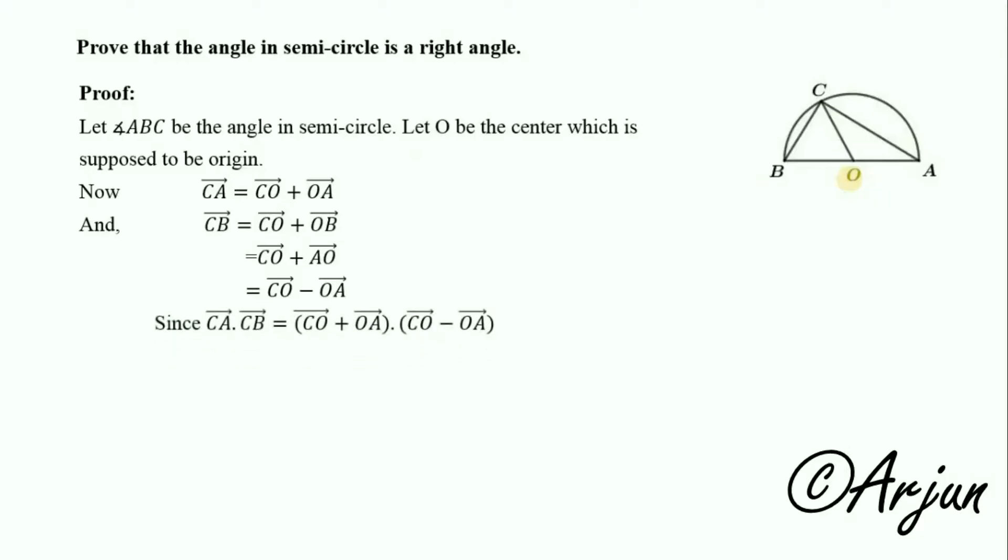So CA equals CO plus OA and CB equals CO minus OA. This is in the form of (a plus b)(a minus b), that is a squared minus b squared.